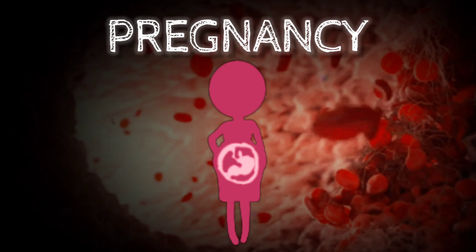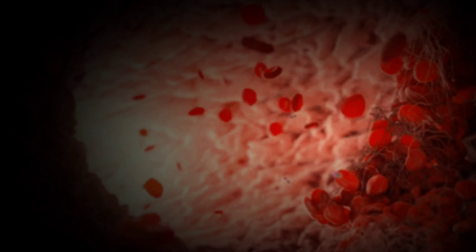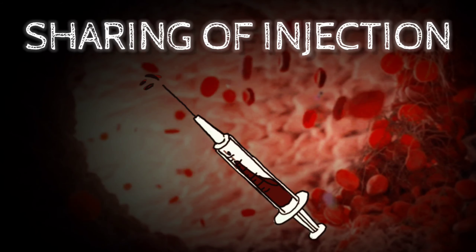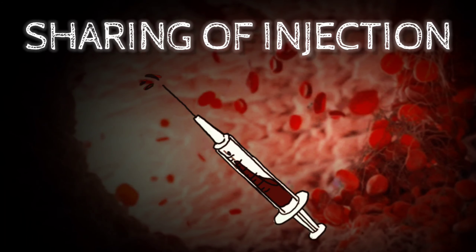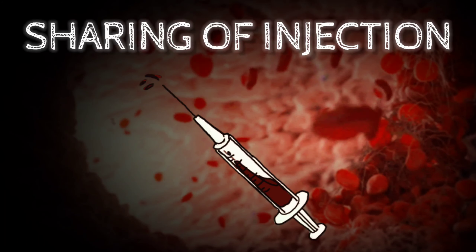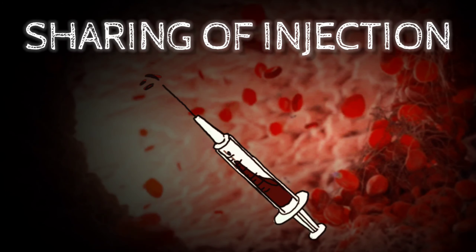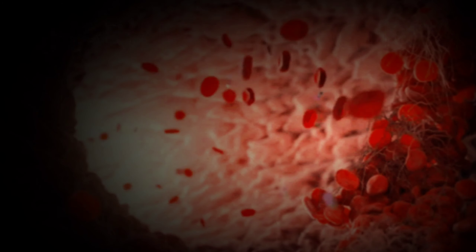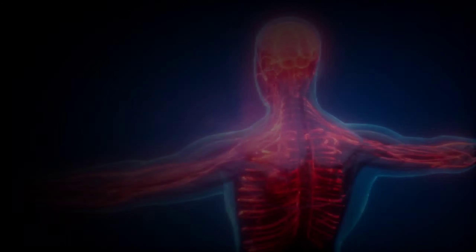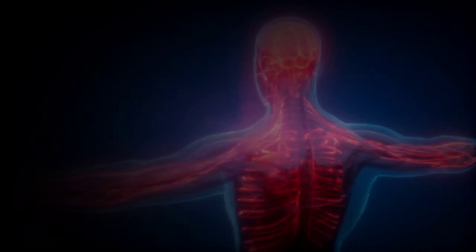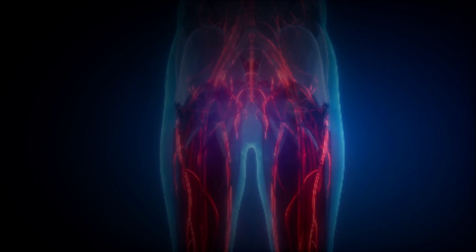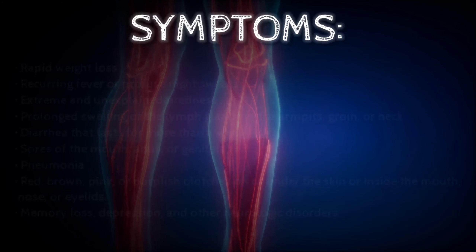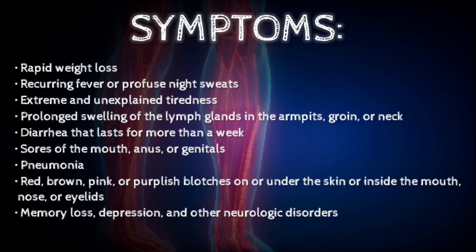Second, it can be transmitted through unprotected sex — engaging in sexual intercourse without protection such as a condom is one way HIV can be transmitted. Third, it can be transmitted through pregnancy, as a pregnant woman with HIV can pass it to her child because the virus can infect the fetus. Fourth, sharing of injection needles is dangerous because a syringe may contain infected blood from an HIV-positive person, which can be transmitted to an HIV-negative person when injected.